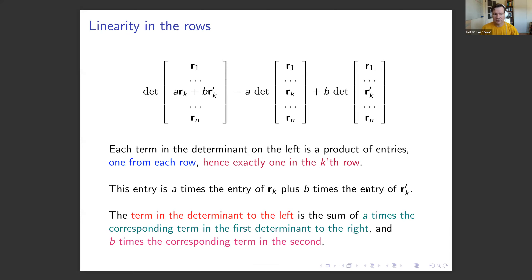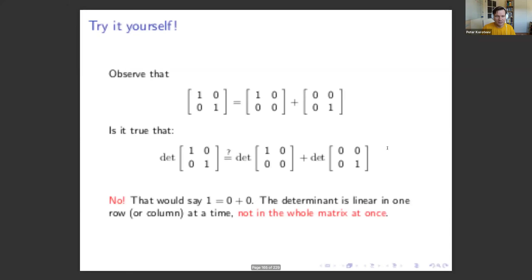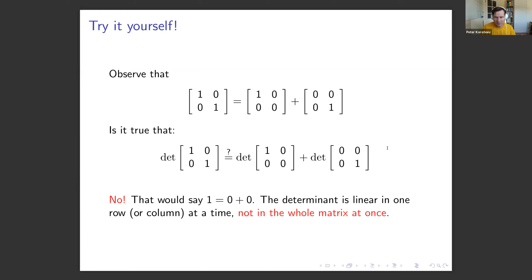Note that the determinant is linear in one row or column at a time, but not in the whole matrix at once. For example, the identity matrix equals the sum of two matrices whose determinants are both zero — so you cannot simply add determinants of summand matrices. The determinant is linear in each single row or column, but not across the entire matrix simultaneously.